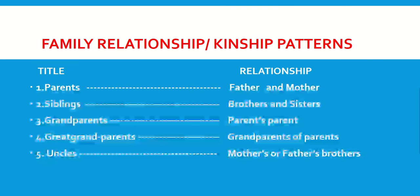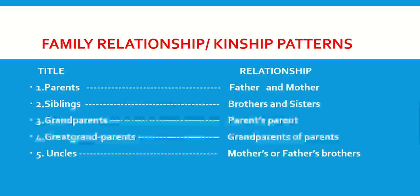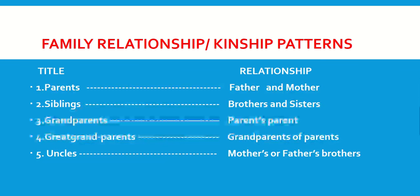Now, family relationship, also known as kinship patterns. Parents are your father and mother. Your siblings are your brothers and sisters. Grandparents are your parents' parents. Great grandparents are your grandparents' parents. Uncles are your mother's or father's brothers.